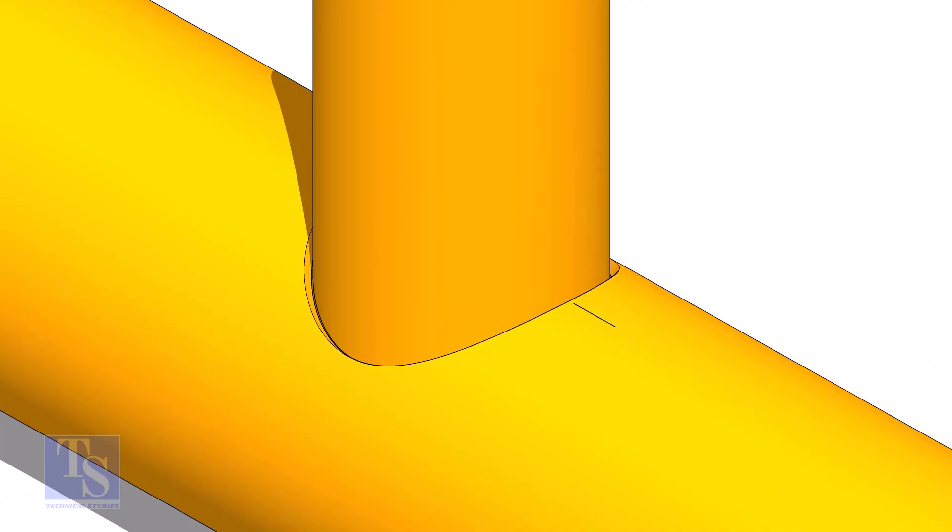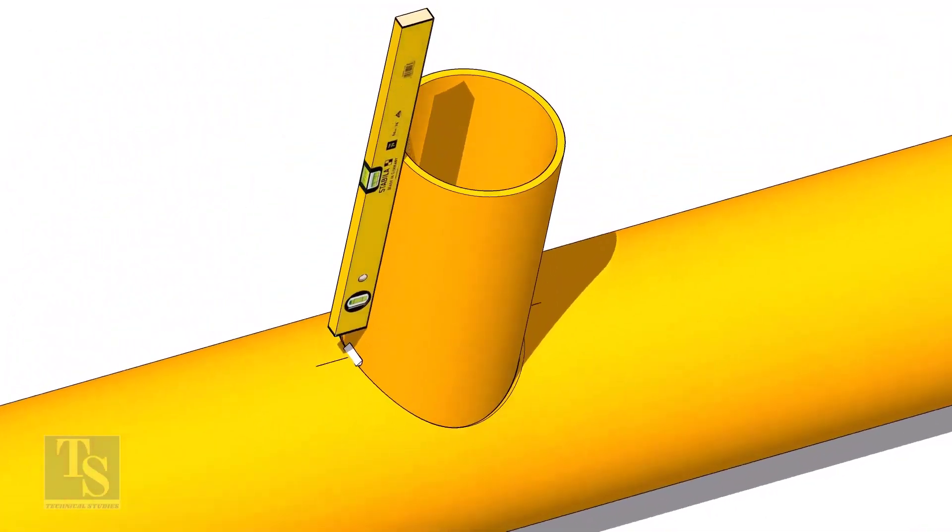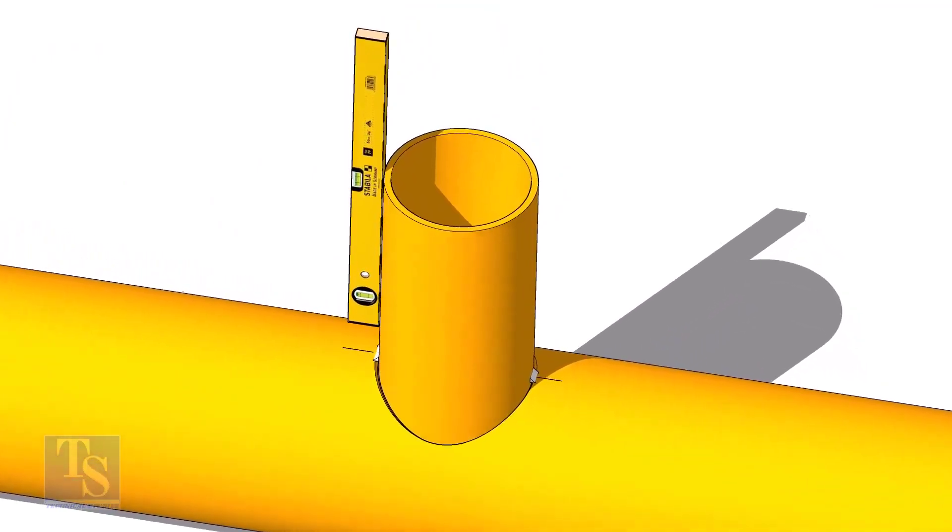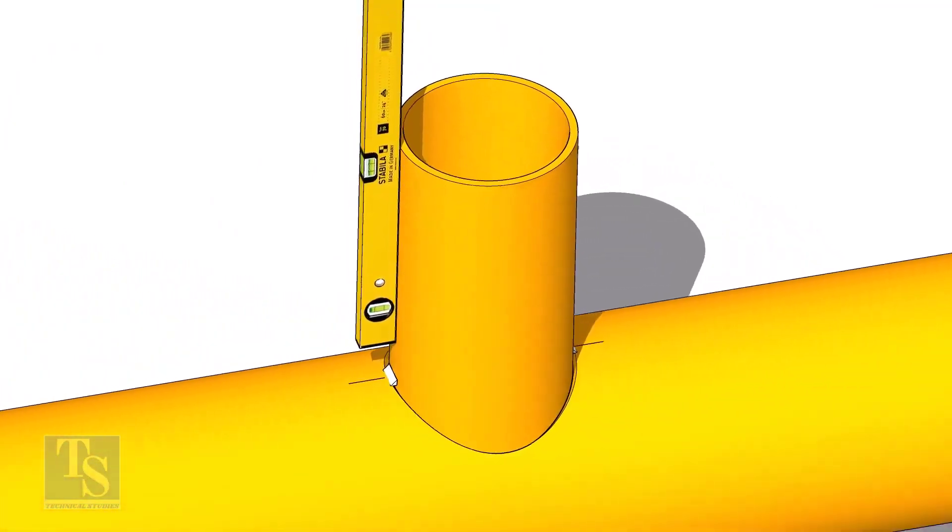Put the branch in its position. Tack weld at one side and check the level of the branch. If the level is correct, tack weld on the other side.